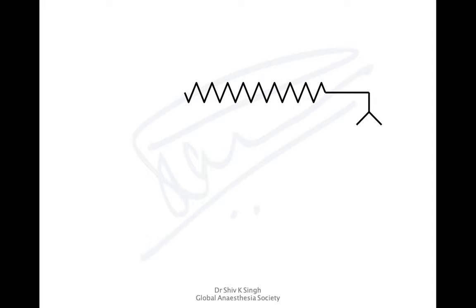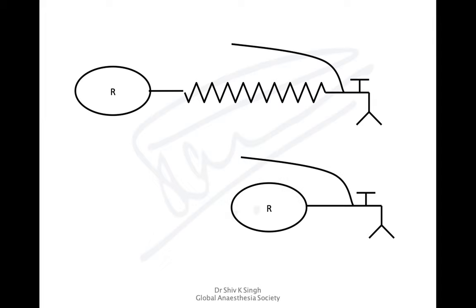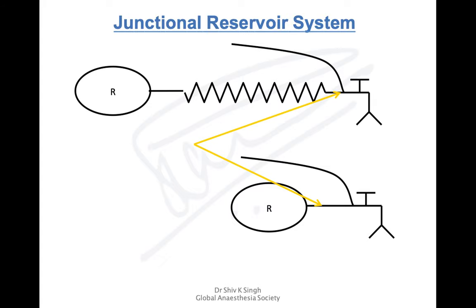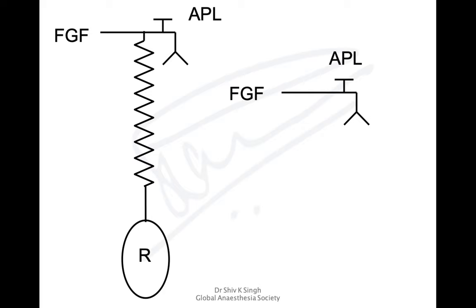Mapleson B is different in that it has a corrugated tubing attached to the bag at the end. The APL valve, fresh gas flows, and everything come close to the patient. In B, there is a corrugated tubing; in C, the corrugated tubing is removed and there is just a reservoir bag. Everything being very close — these are called junctional reservoir systems per Miller's classification. In B, the reservoir bag hangs between the fresh gas flow and APL valve at the junction with the corrugated tubing; in C it is taken off — hence junctional reservoir system.